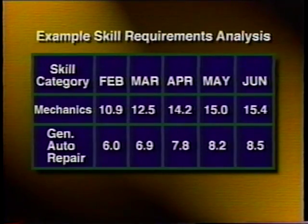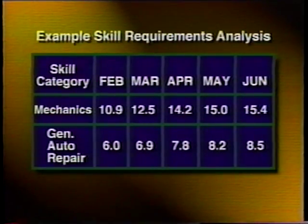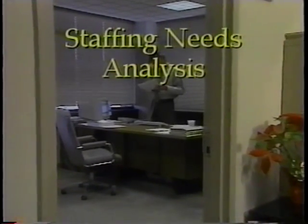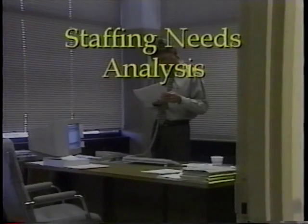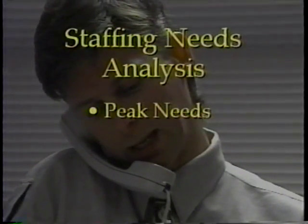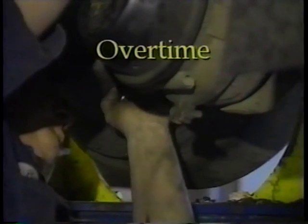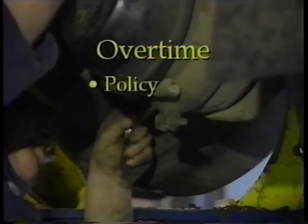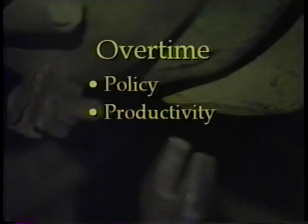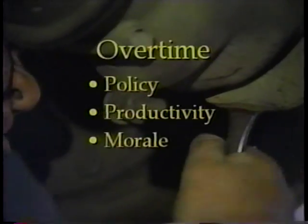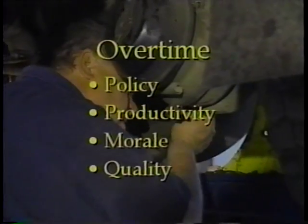How can total staffing fluctuate from a low demand of 10.9 in February to a high of 15.4 in June? After analyzing total staffing needs, the fleet manager must define exactly when peak needs arise and what alternatives are available to meet those needs. Overtime is an alternative for meeting some peak demands and should be evaluated in terms of agency policy on overtime, effect on worker productivity, effect on worker morale, and effect on quality of work.